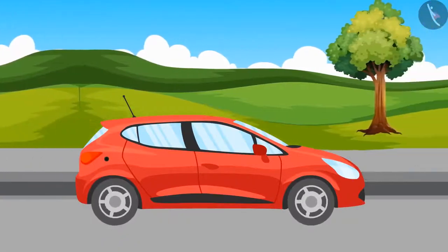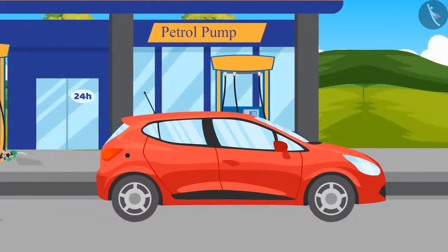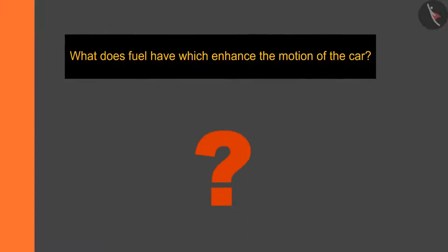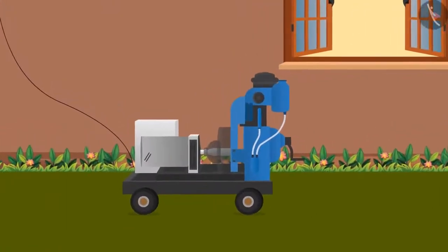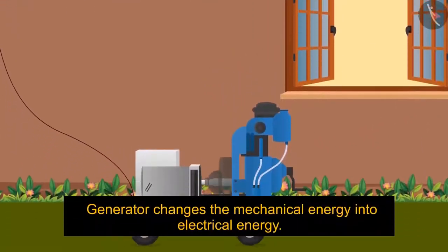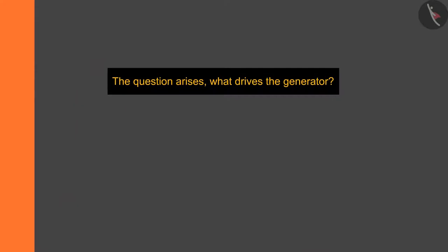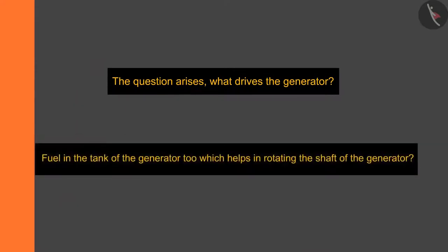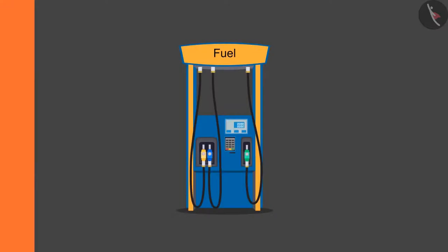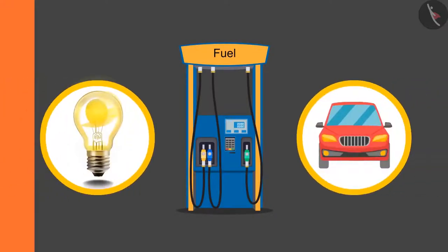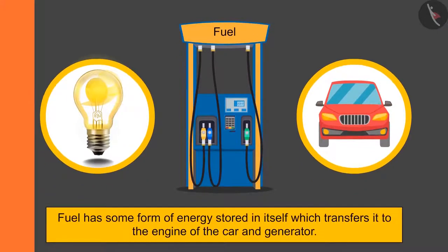As the fuel in the tank gets over, the moving car on the road stops. As soon as the fuel is refilled, it starts moving again. What does fuel have which enhances the motion of the car? As we have seen in previous videos, an electric generator changes mechanical energy into electrical energy. What drives the generator? There is something in the fuel which enhances the motion of the shaft and the car — fuel has some form of energy stored in itself which transfers to the engine of the car and generator.